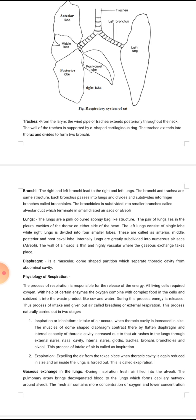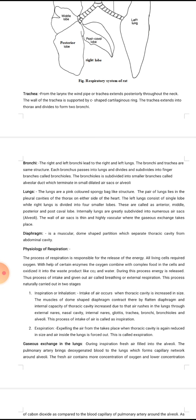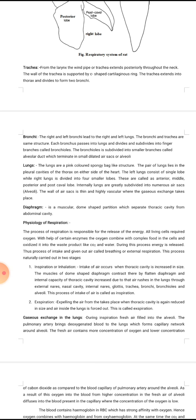The wall of the air sacs is thin and highly vascular, where gaseous exchange takes place. The alveoli are acinar-like, pouch-like structures where air is stored and gases are diffused.